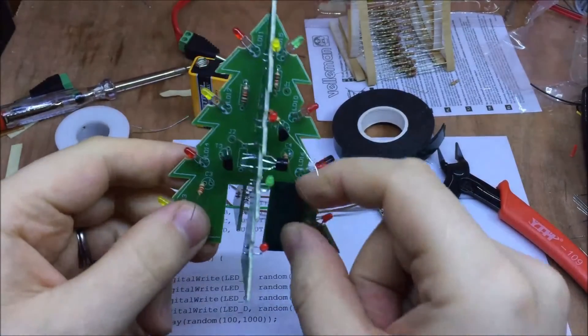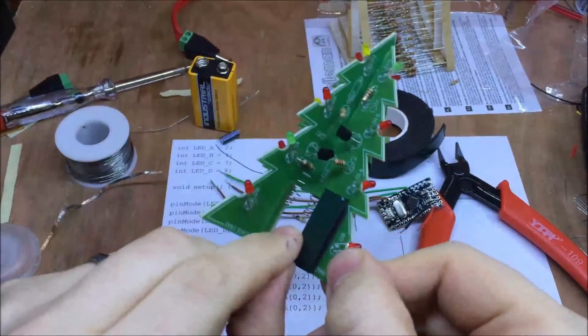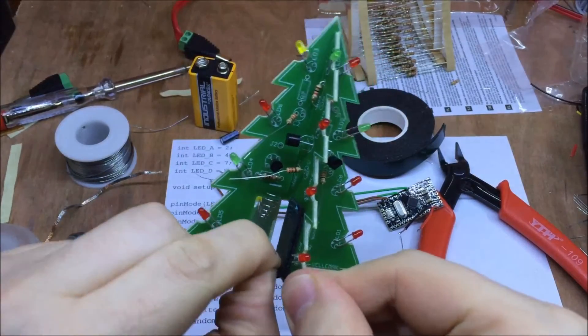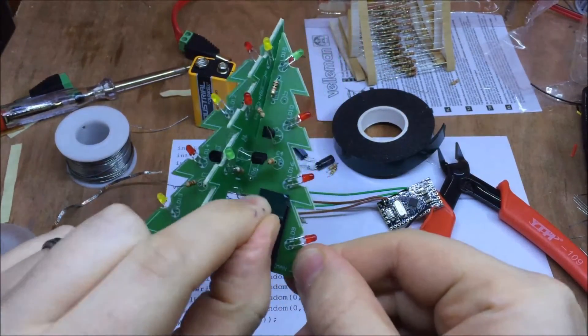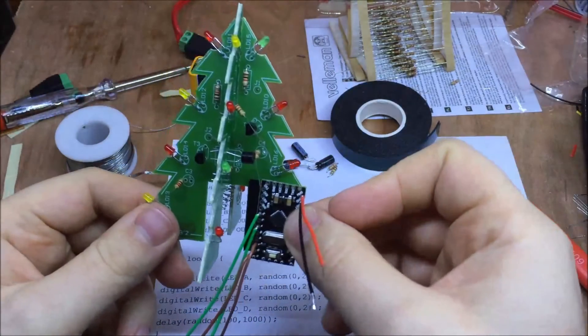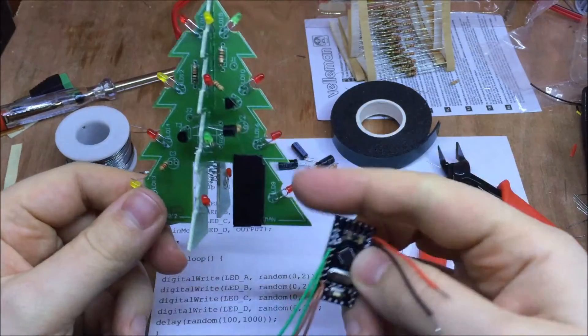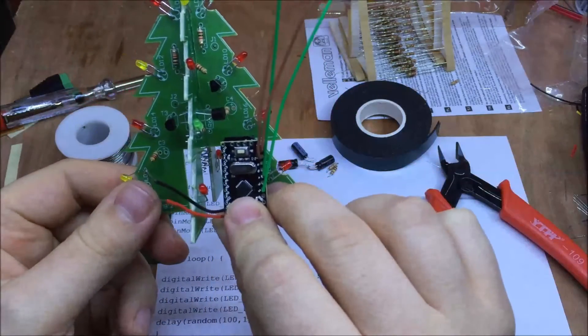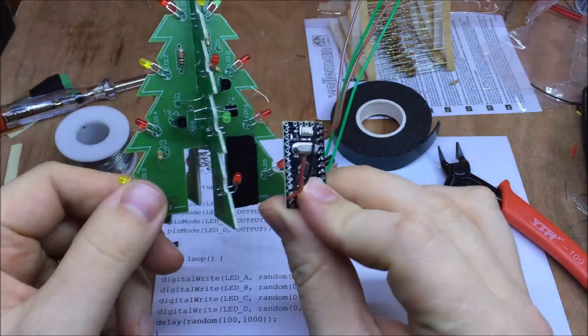So then, some foam double-sided sticky tape on here should secure the Arduino and make it a bit easier for me to solder these wires, which way up makes more sense.